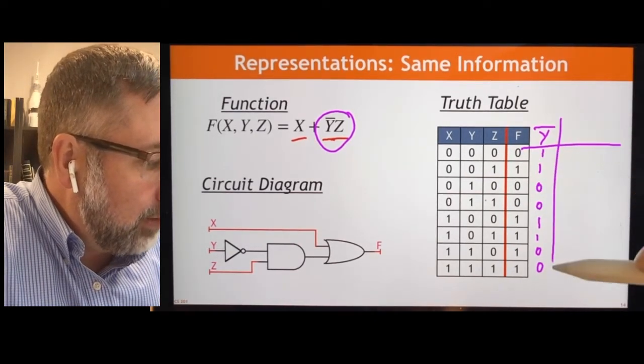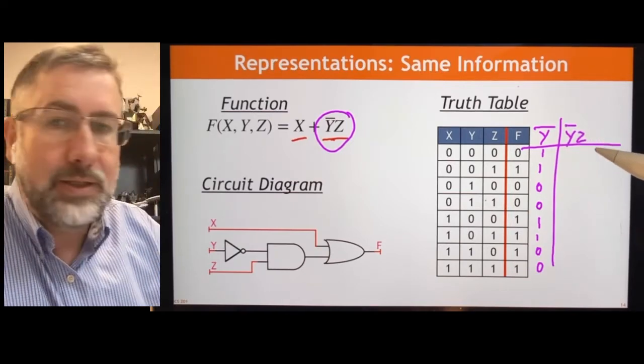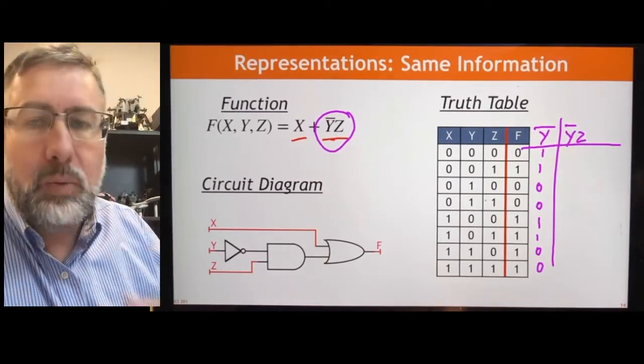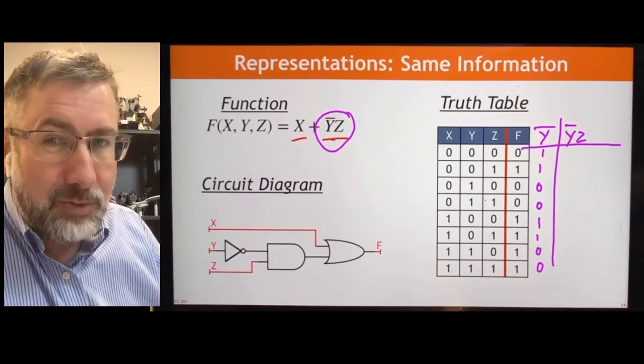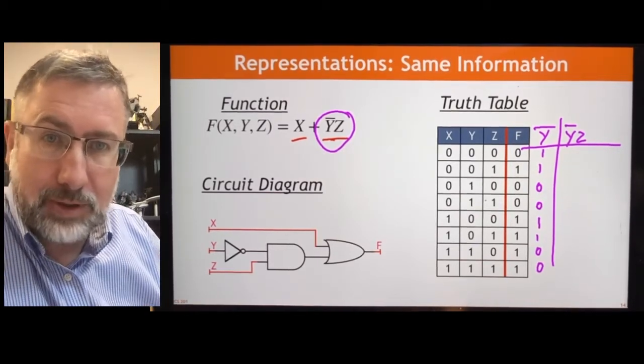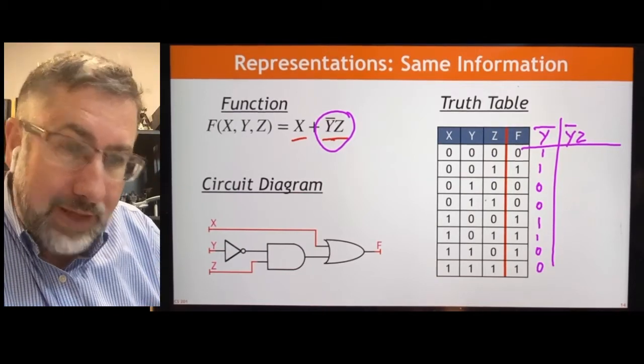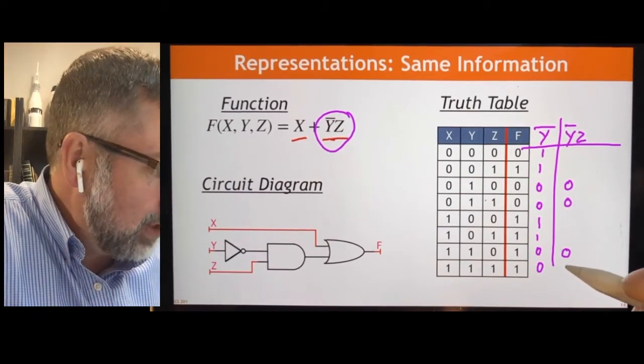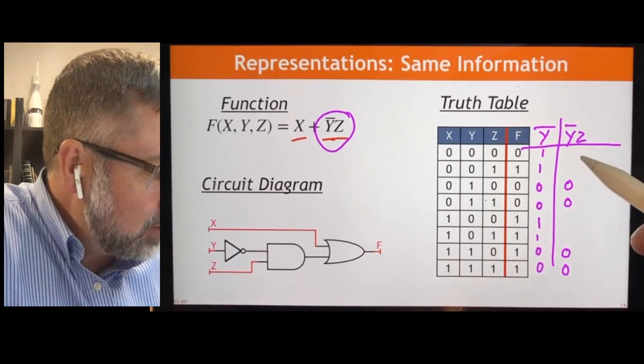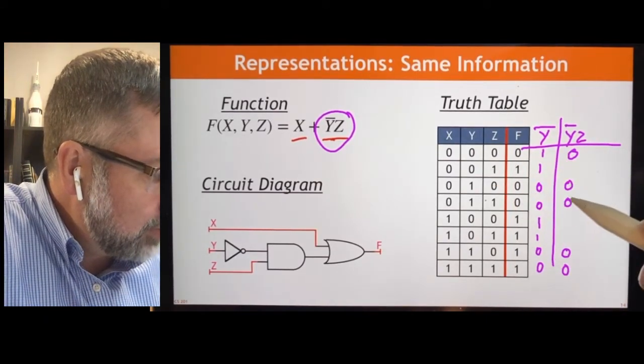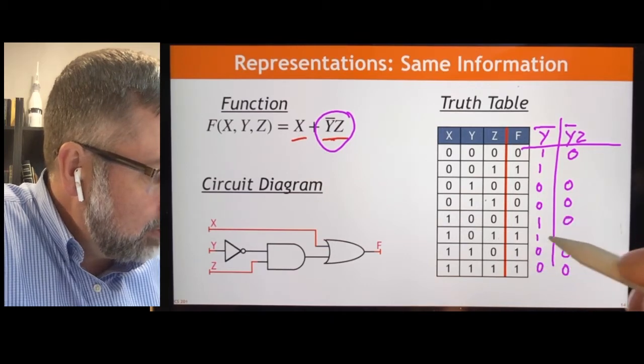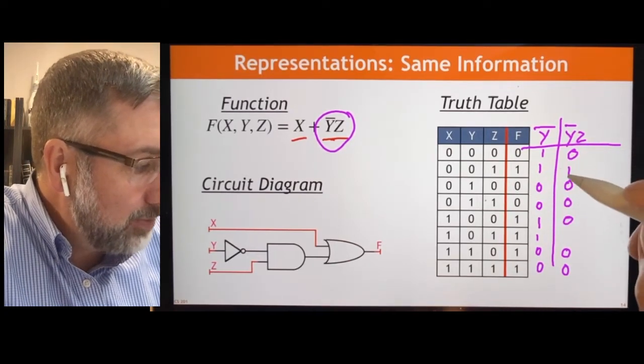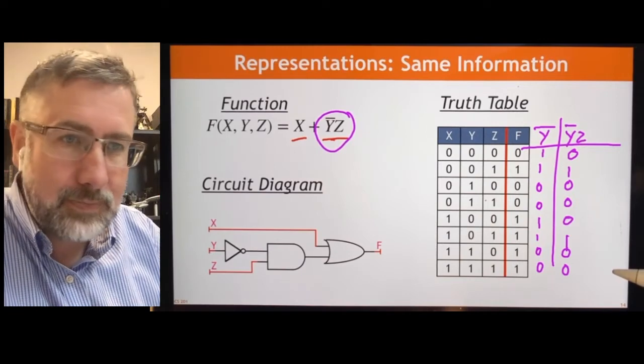Then we can look at what y bar z would be. To do that, we take the y bar and we're going to and it with z. And that means it can only be 1 where both inputs are 1. So if either y bar or z is a 0, that term y bar z has to be 0. That's our definition of and. And so we can look at y bar and say if it's 0, then the output has to be 0. That term has to be 0. We can look at z. z is here. 0 has to be 0. 0. That's already a 0. 0 has to be 0. That one is 0. So the only place where y bar z is 1 is if y bar is 1 and at the same time z is 1. And it only happens twice in those two places.